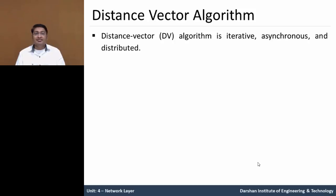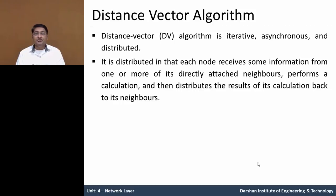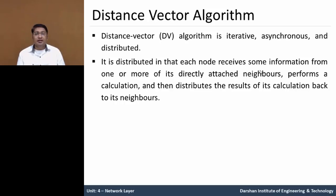Let us understand how it is iterative, asynchronous, and distributed. First, it is distributed in that each node receives some information from one or more nodes which are directly attached — the neighbors. It receives values from one or more connected nodes, performs a calculation, and then distributes the results of that calculation back to those neighbors.